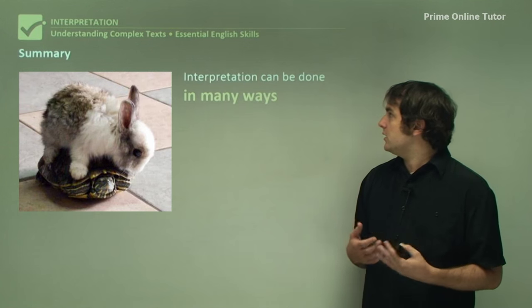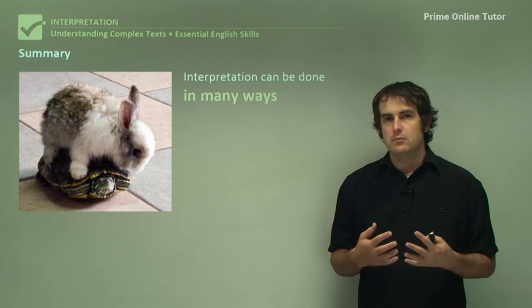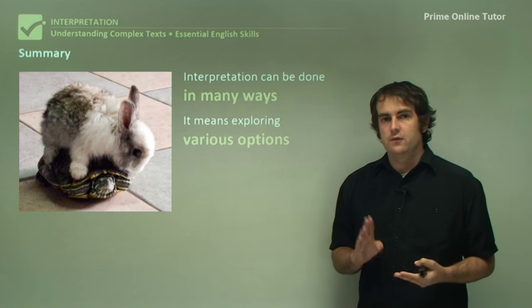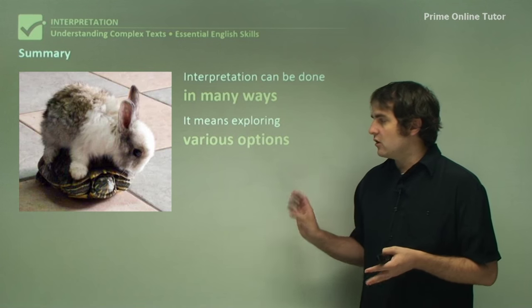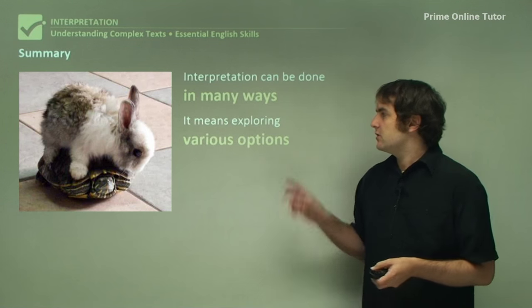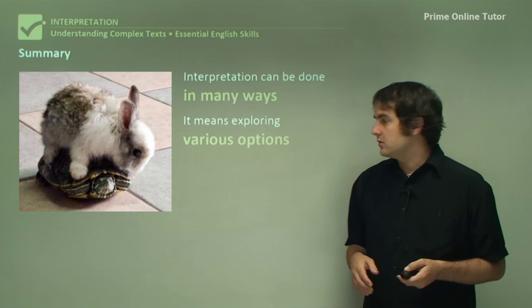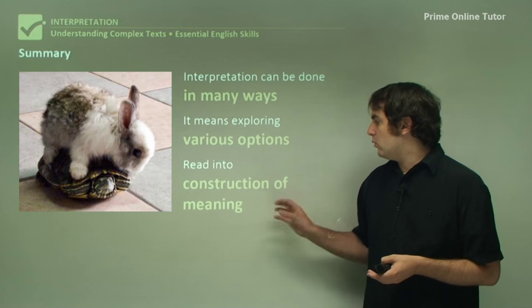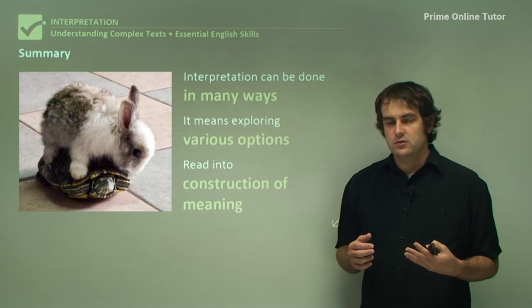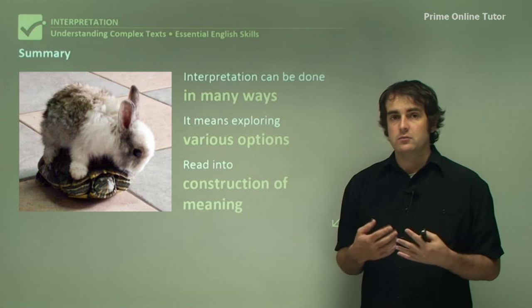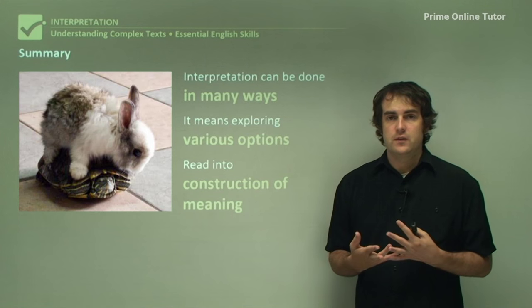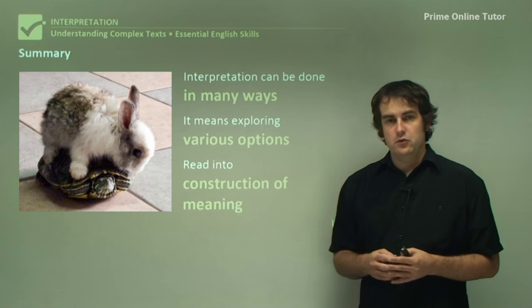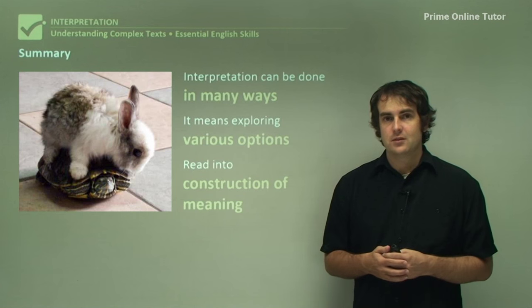So in summary, interpretation is something that you can do a number of different ways, and I want you to consider all those four aspects. It means exploring various options. Don't just go for the most obvious ones. Look around, look outside, think of different options. And finally, read into construction of meaning as well. What is this text doing? What was it trying to pursue? Was it trying to make us think? Certainly you look at connecting it to the theme in order to do that. But otherwise, that's it for the strategies of interpretation. So until next time, I'll see you later.